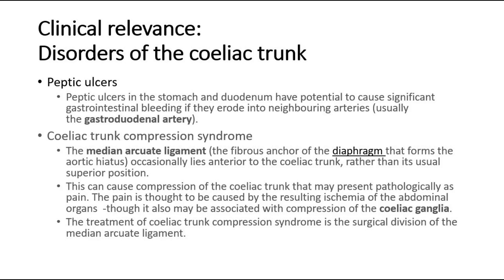Celiac trunk compression syndrome: the median arcuate ligament occasionally lies anterior to the celiac trunk, rather than its usual superior position. This can cause compression of the celiac trunk, presenting pathologically as pain. The pain is thought to be caused by the resulting ischemia of the abdominal organs, though it may also be associated with compression of the celiac ganglia. Treatment is the surgical division of the median arcuate ligament.